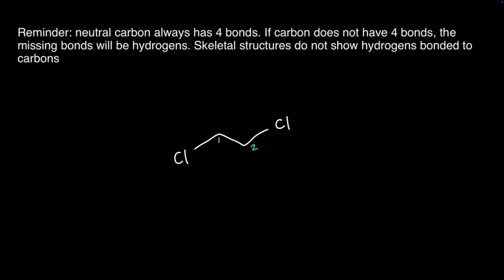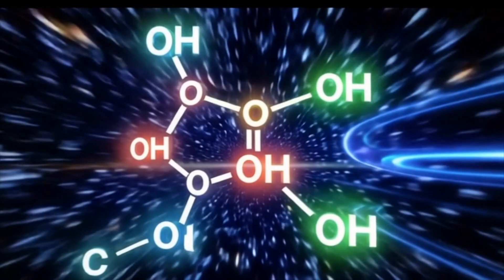One last reminder: if you see a skeletal structure that doesn't explicitly show all four bonds to a carbon, those bonds still exist. The missing ones are almost always hydrogens, and they need to be included when you draw the wedge and dash model and the Newman projection.